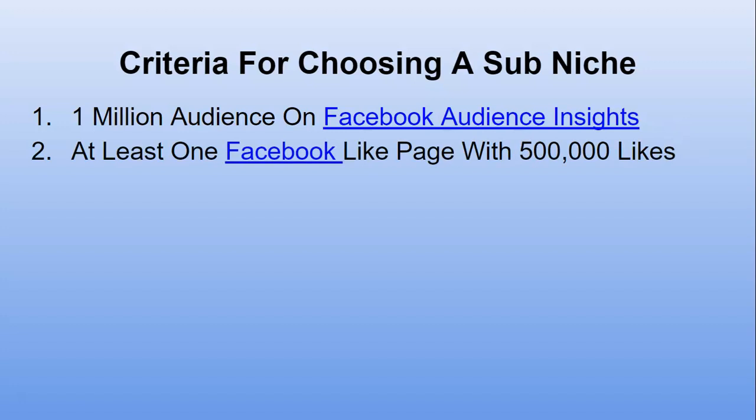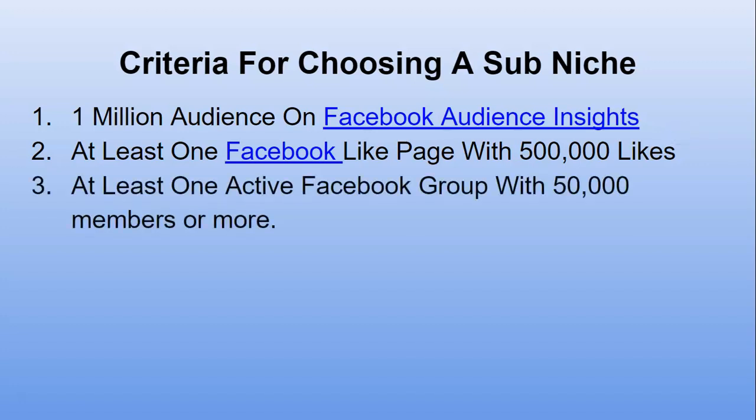You need at least one Facebook Like page with 500,000 or more likes. I originally had it at one million, but students came back saying that was very hard to find. My argument was that if it's a truly passionate audience there should be a page with a million, but we settled on 500,000. You also need at least one active Facebook group with 50,000 members or more — originally 100,000, but debating with students brought it down to 50,000.